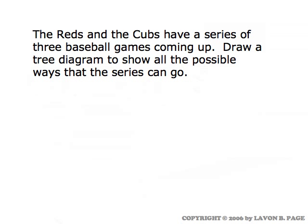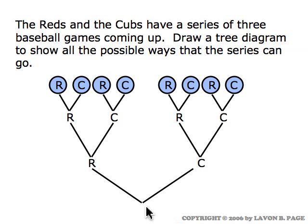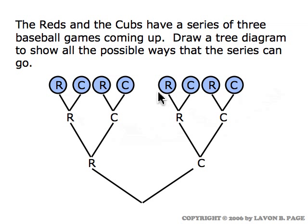Now let's move on to a baseball series involving the Reds and the Cubs. We're going to draw a tree diagram to show all the ways that the series can go — they're playing three games. Our tree diagram shows first the possibility for who wins game one, the Reds or the Cubs. Then no matter what happens in the first game, we show the two possibilities for the second game, and similarly we continue a third level for the outcome of the third game. Each of the circles at the top represents one possibility for the entire series. One circle represents the Cubs winning game one, the Reds winning game two, and then the Reds winning game three.